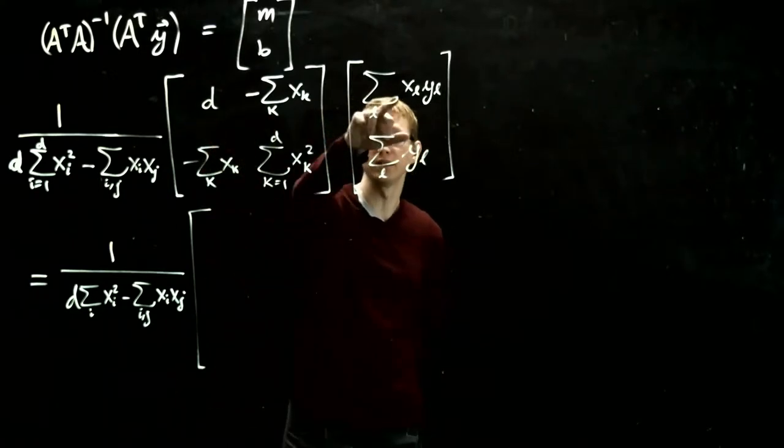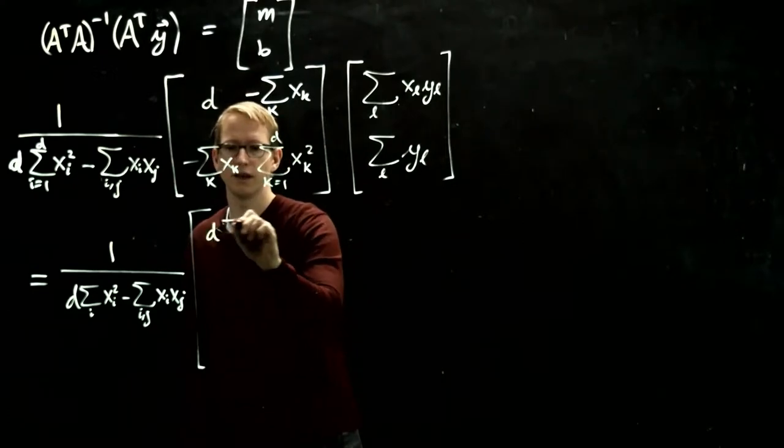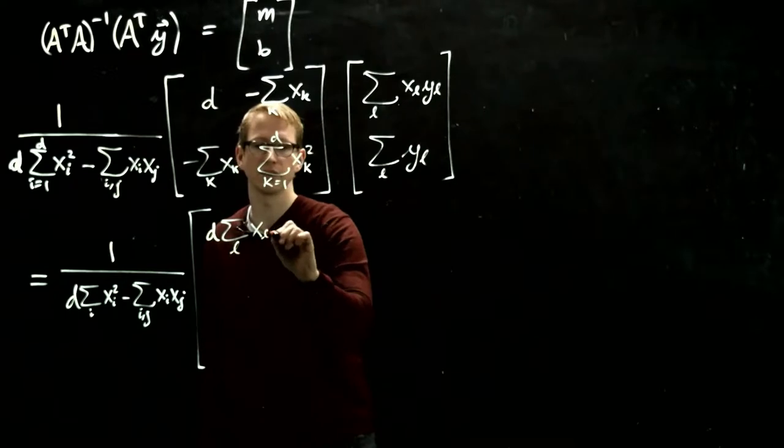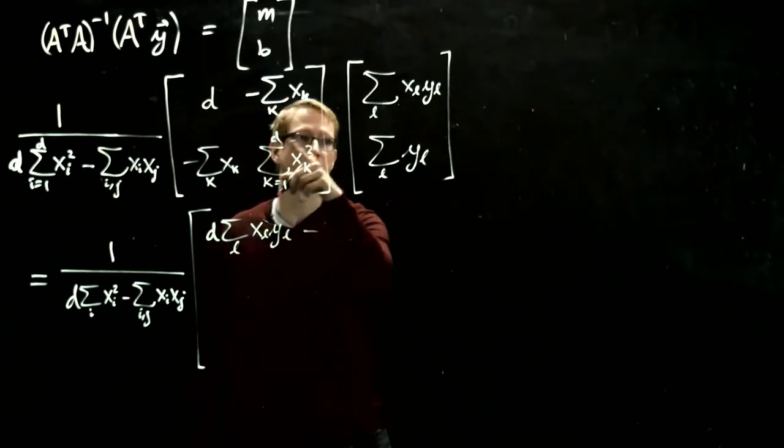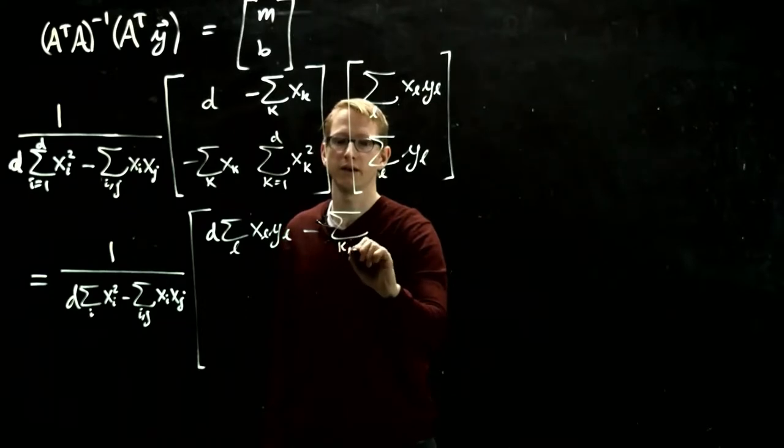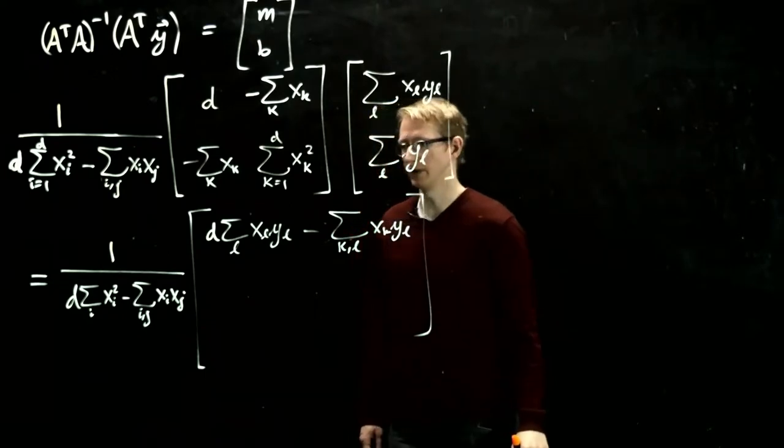So then we multiply d by this, and we multiply this by this. I'm just going to do this all out. d times this sum over, it's just l, one index, xl yl minus this expression. There's two sums here now, k and l, xk yl. That's the first component of this vector.